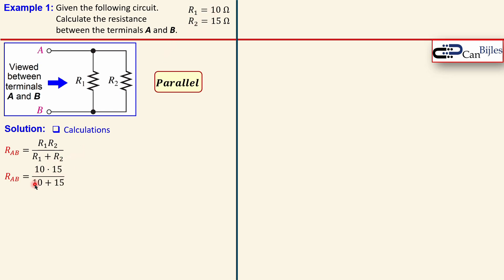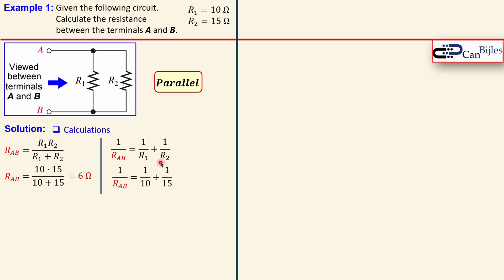The direct formula for two resistors in parallel is the product divided by the sum: 10 times 15 divided by 10 plus 15, which gives exactly 6 ohms. You can also use the general formula: one over R_ab equals one over R1 plus one over R2. Substituting the values — one over 10 plus one over 15 — and taking the reciprocal also gives exactly 6 ohms.